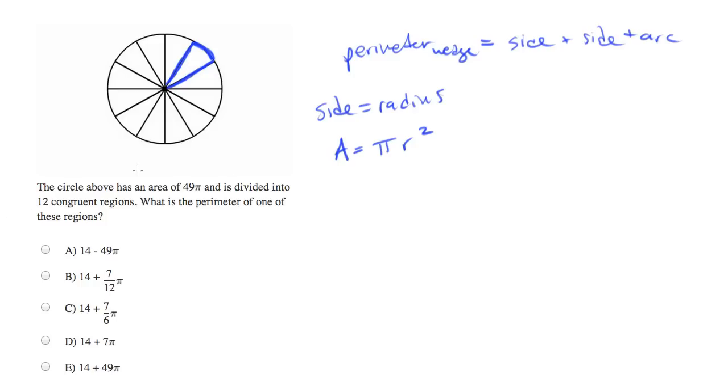Now we've been given the area. Area is 49 pi equals pi r squared. And from this we can calculate the value of r.